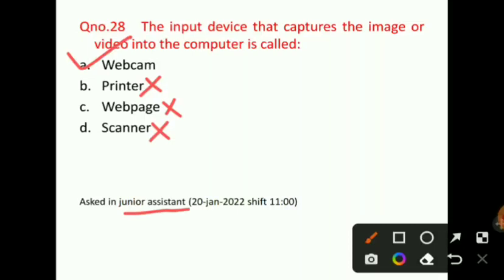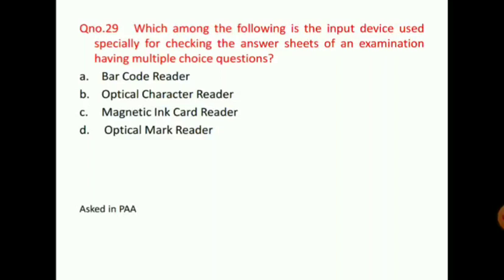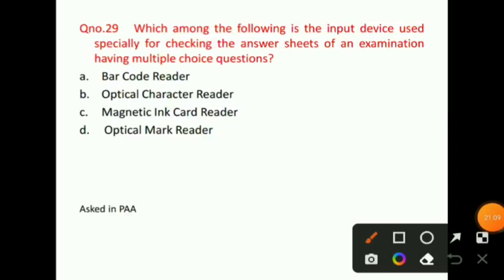Question number 29: Which among the following is the input device used specifically for checking answer sheets of an examination having multiple choice questions? Barcode reader is not used for this. Optical character reader and magnetic ink card reader also do not apply. The correct answer for question number 29 will be option D, that is, optical mark reader — OMR.